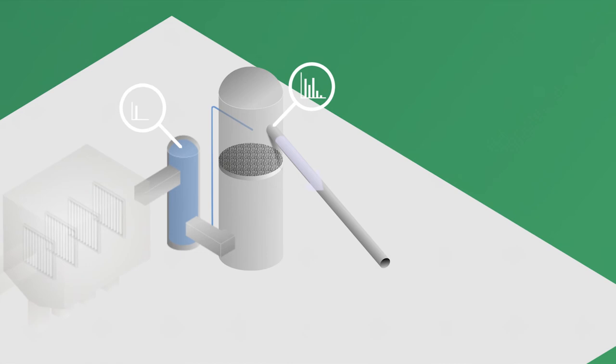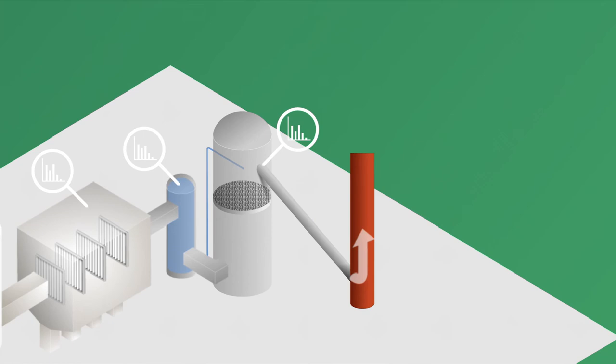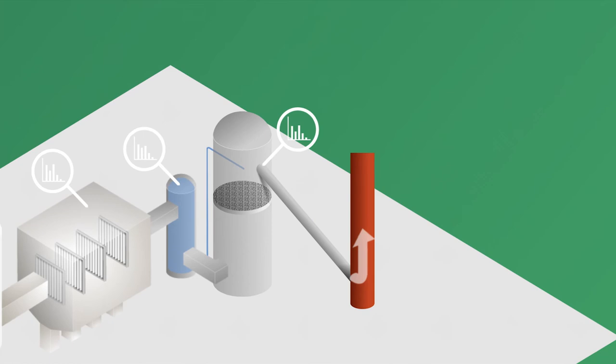Innehållet i rökgaserna mäts kontinuerligt vid flera olika positioner. Detta för att säkra att innehållet i rökgaserna har önskad nivå. Röken som kommer ut genom skorstenen består av ren vattenånga.